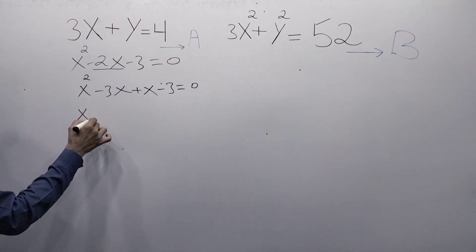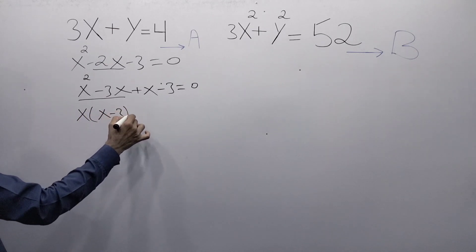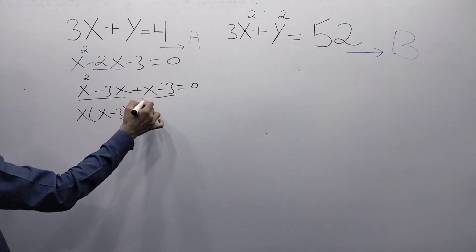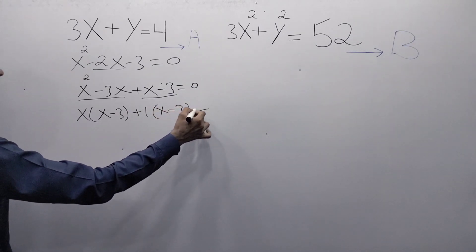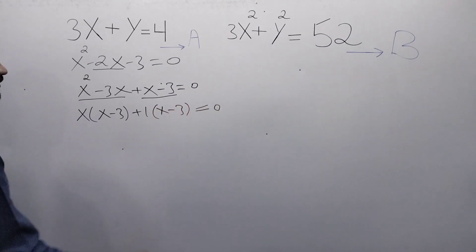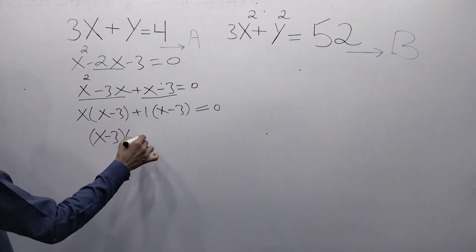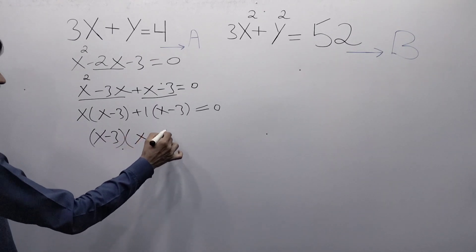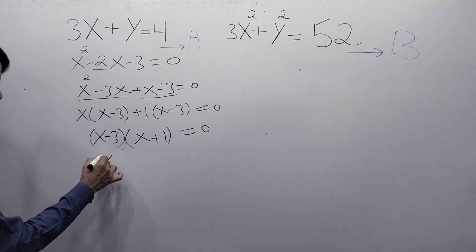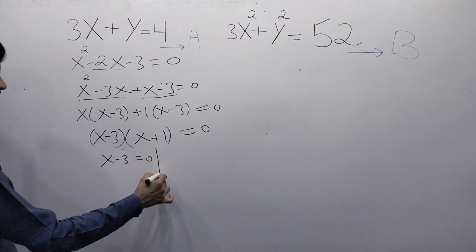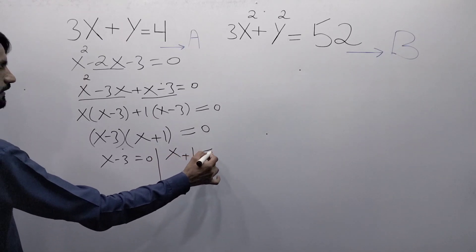Taking x as a common factor from the first two terms: x(x minus 3) plus 1(x minus 3) equals 0, which gives (x minus 3)(x plus 1) equals 0. So either x minus 3 equals 0 or x plus 1 equals 0.